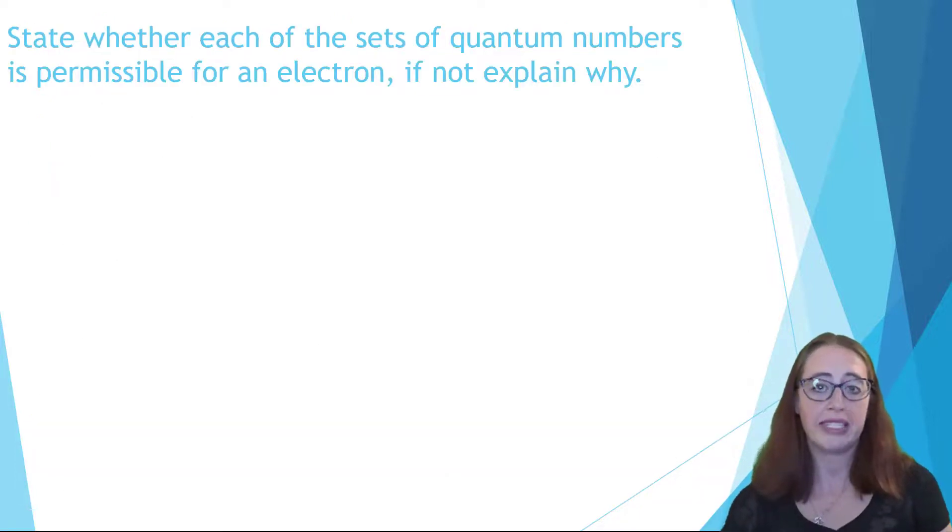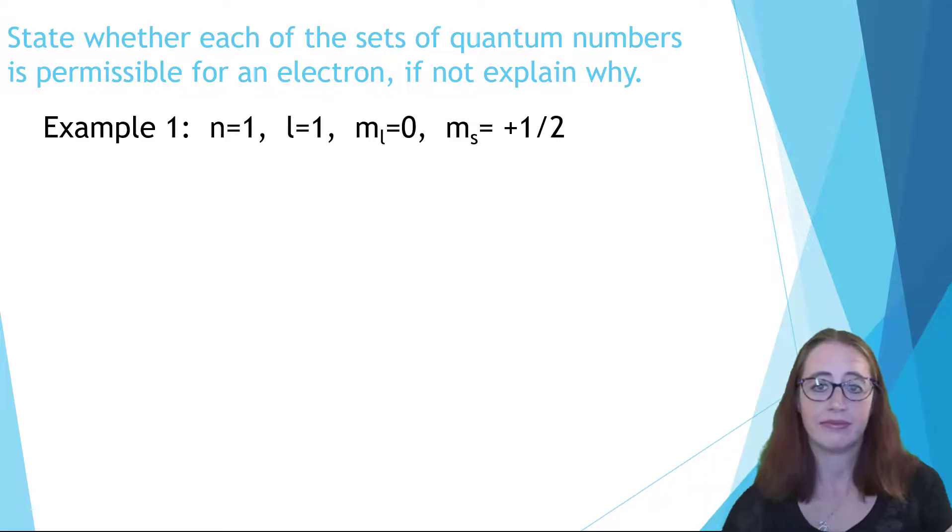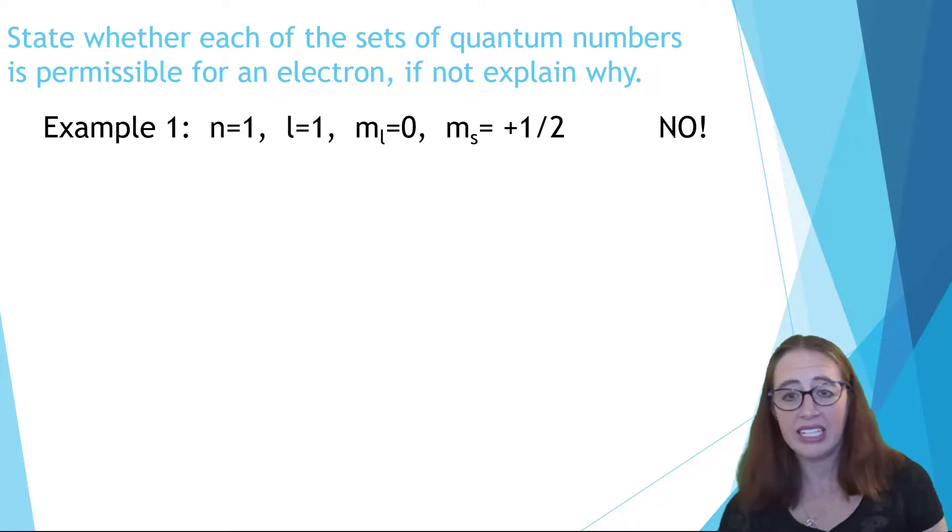Let's do a few examples where we decide if a set of quantum numbers is allowed. And if not, why? Let's look at the first set. Look at the numbers listed and decide if this is allowed. So this set isn't allowed. Where's the problem? Well, if n equals one, then l is only allowed to equal zero. l can't equal one. So this one must be wrong.